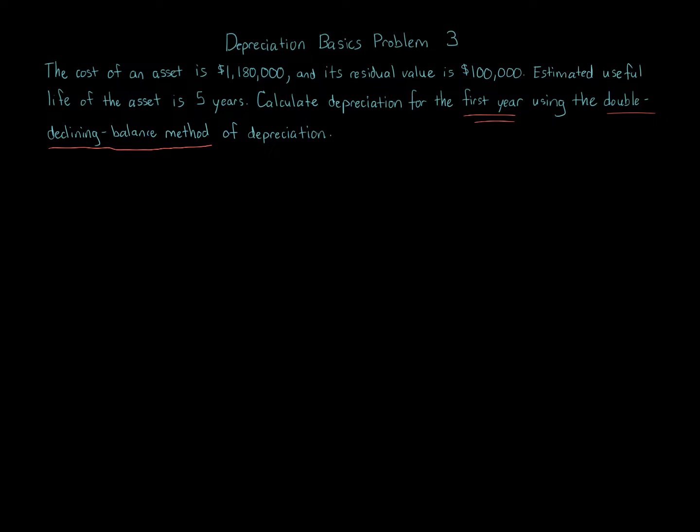I'm going to go further to show you how to calculate this in other years as well. Before we go into the steps, let's read the question again. The cost of an asset is $1,180,000, residual value $100,000, estimated useful life 5 years. The problem does not say it was placed in service partway through the year, so we assume it was placed in service at the beginning of the year, and we assume calendar year.